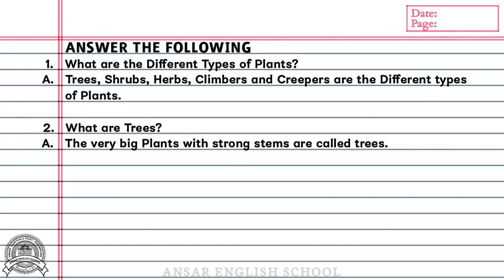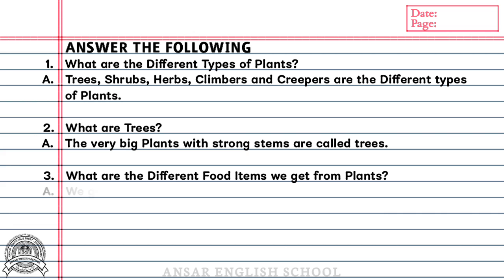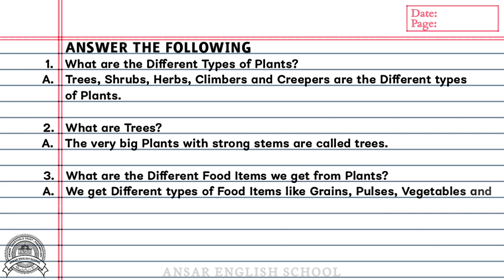Question number 3: What are the different food items we get from plants? Answer: We get different types of food items like grains, pulses, vegetables and fruits from plants.